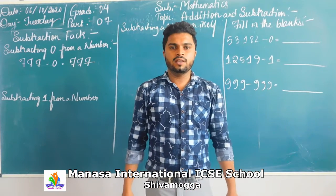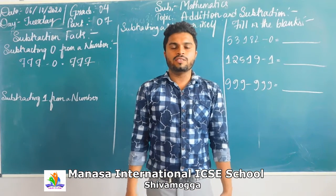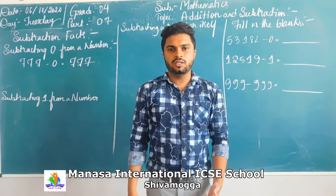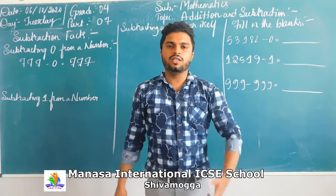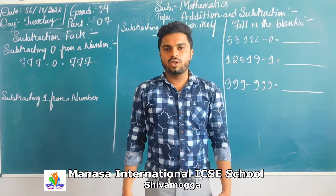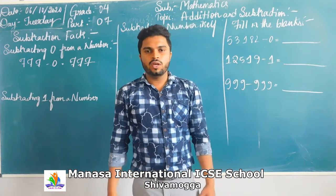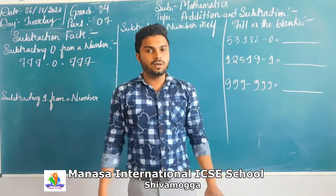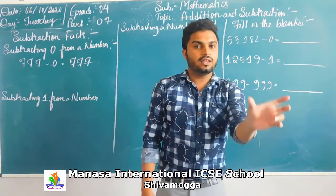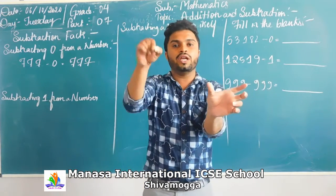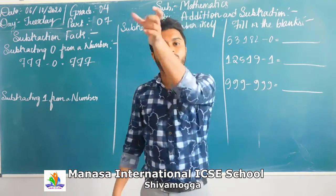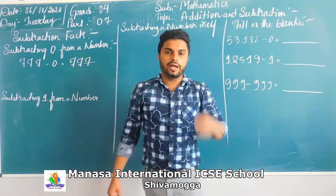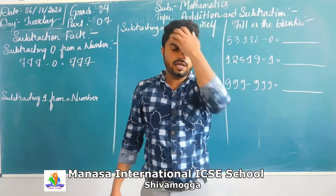Hello everyone. In the previous class we covered subtraction and checking answers. What you have to do is subtract the two numbers, then add that subtracted answer back to the smaller number, and you will get the original number.